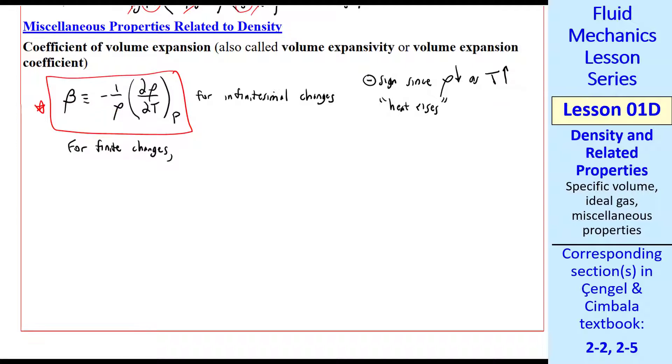Just a finite version of this infinitesimal change. And we write out at constant pressure. By the way, beta has dimensions of 1 over temperature and units of 1 over Kelvin.